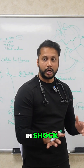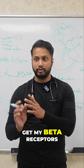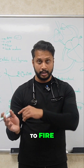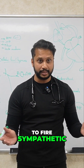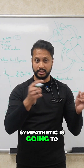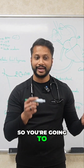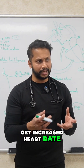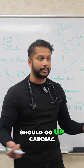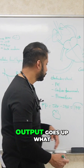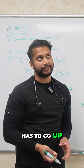Say if somebody is in shock and blood pressure is low, you're going to get your beta receptors to fire. Beta receptors fire sympathetically, stimulating your heart — specifically beta 1 — so you're going to get increased heart rate and increased inotropy. Cardiac output goes up. And when cardiac output goes up, what happens to systolic blood pressure? It goes up. It has to go up.